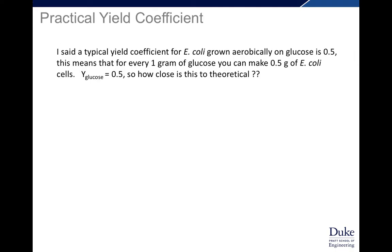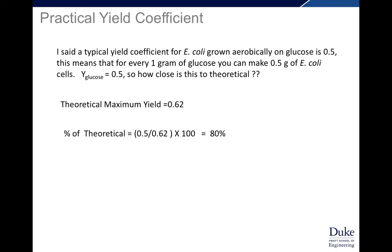Practically, the yield coefficient for E. coli grown aerobically on glucose is 0.5, meaning for every gram of glucose you make 0.5 grams of E. coli. So how close is this to theoretical? At theoretical maximum based on material and energy balances it's around 0.62, and in ideal cases we can get 0.5 — about 80% of theoretical, which is pretty good. Many cultures grown in the lab will be much less than 0.5; that 0.5 yield coefficient would be from an optimal fermentation condition.